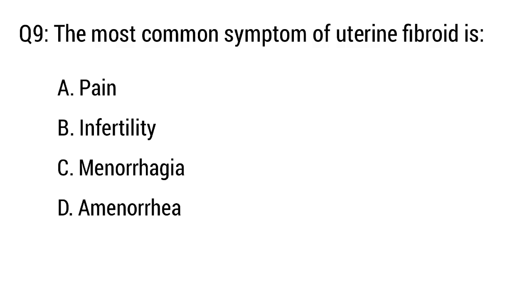Question number 9. The most common symptom of uterine fibroid is — the right option is option C: Menorrhagia.